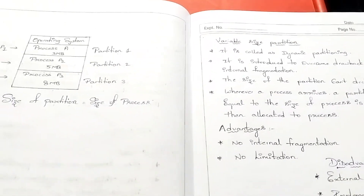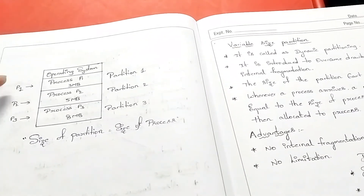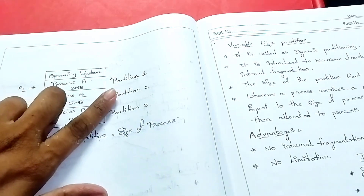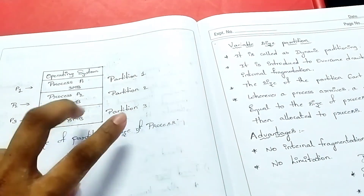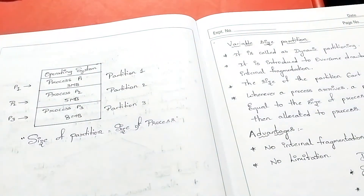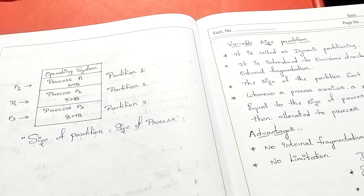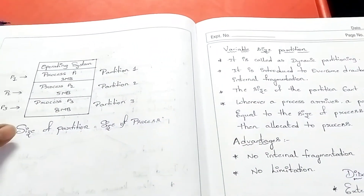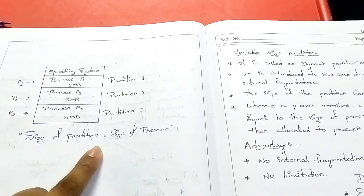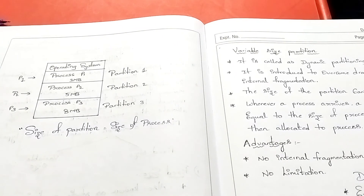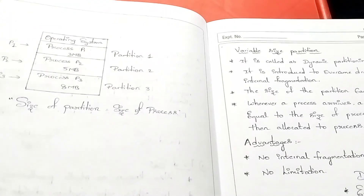Now I will show you a block diagram. In total, you have 3 processes in the operating system. P1 is sent to partition 1, P2 is sent to partition 2, and P3 (8MB) is sent to its partition. The size of the partition is equal to the size of the process. Memory is used efficiently, and internal fragmentation is avoided. That is about the variable size partition.